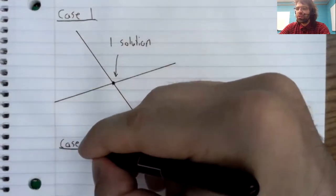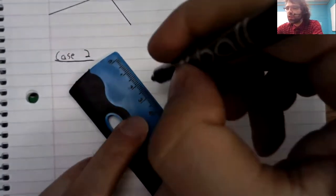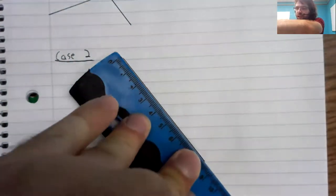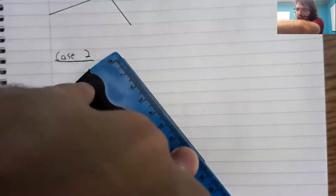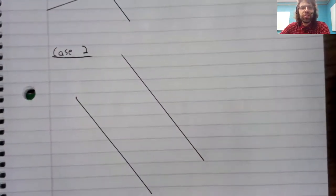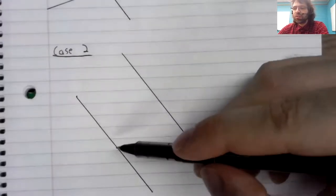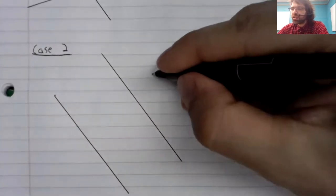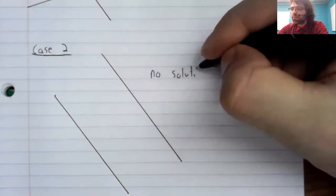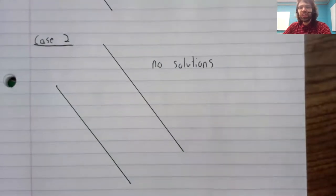In case two, we draw a line, and then we draw the other line. And these two lines are parallel, so they never intersect, and there are no solutions.